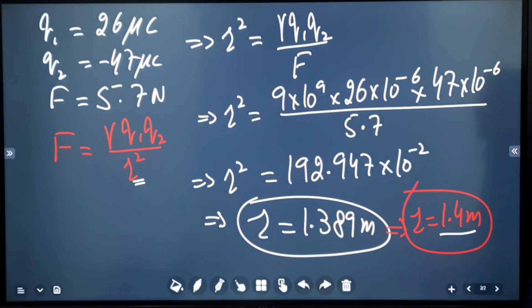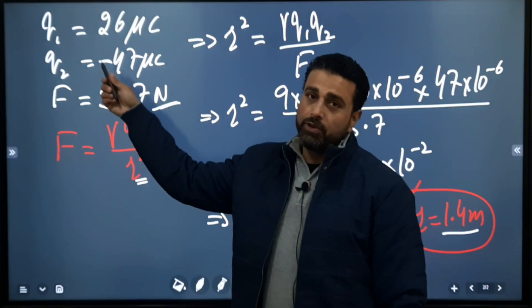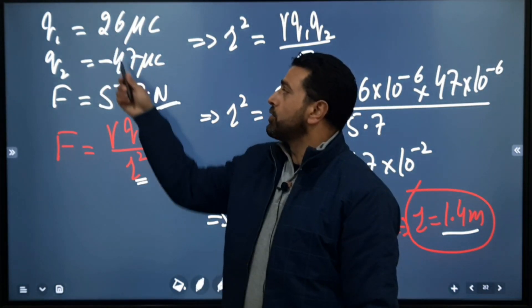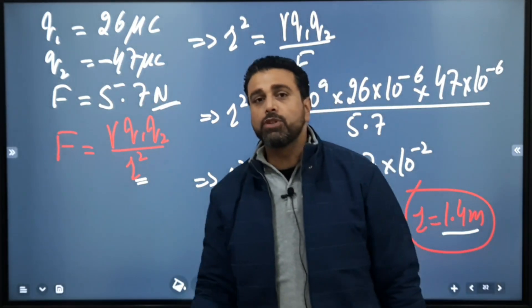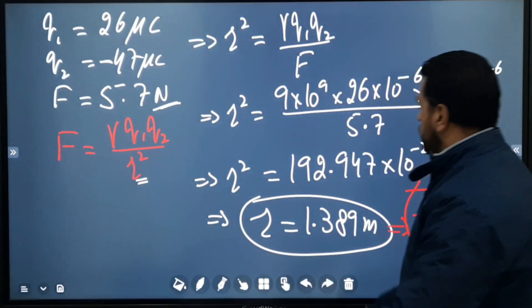Then only the force between them will be 5.7 Newtons. The two charges are unlike—this one is positive, this one is negative—so there must be an attractive force between them. We just need the magnitude.